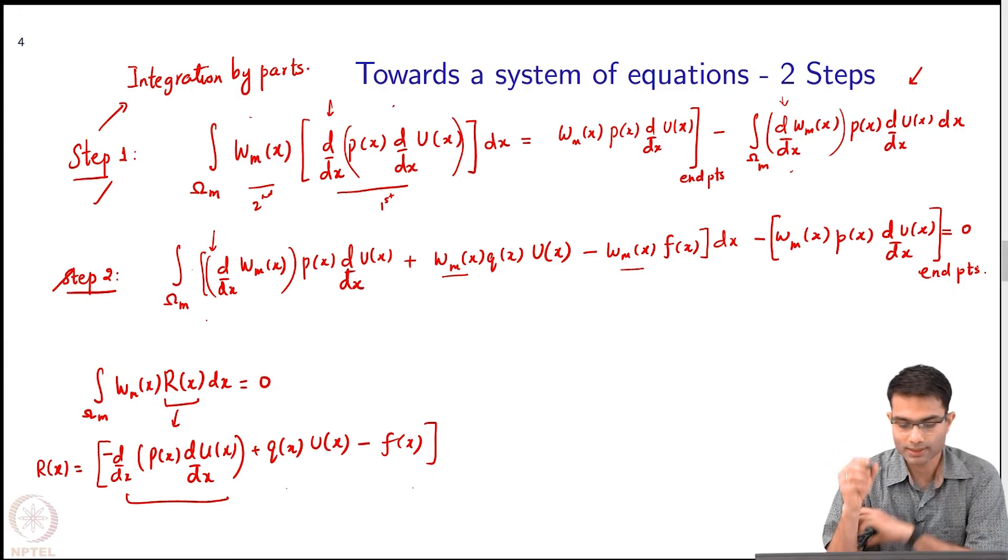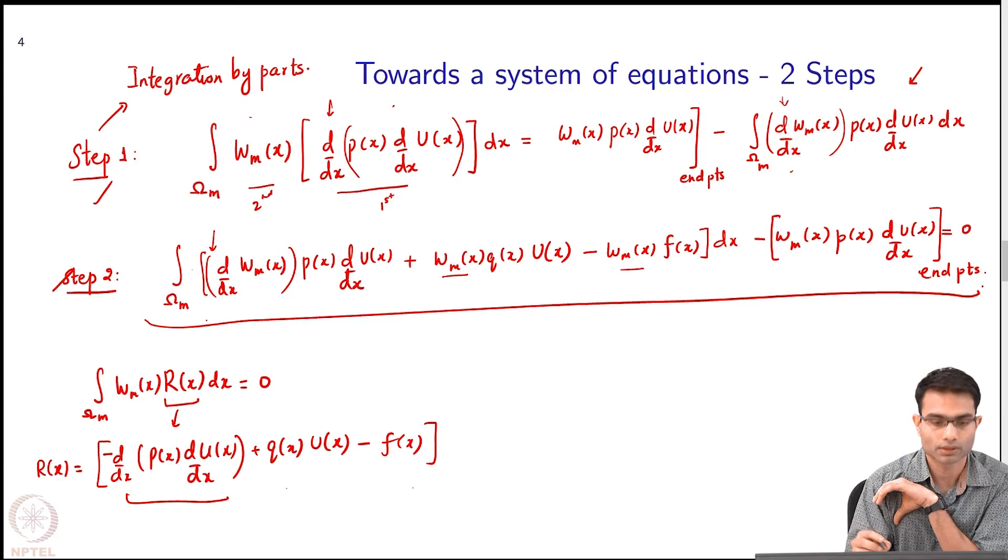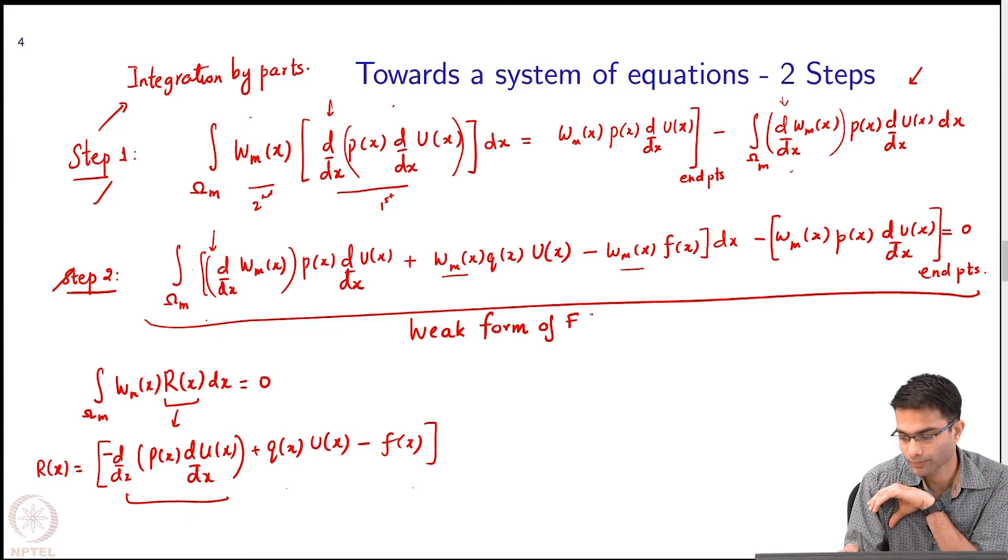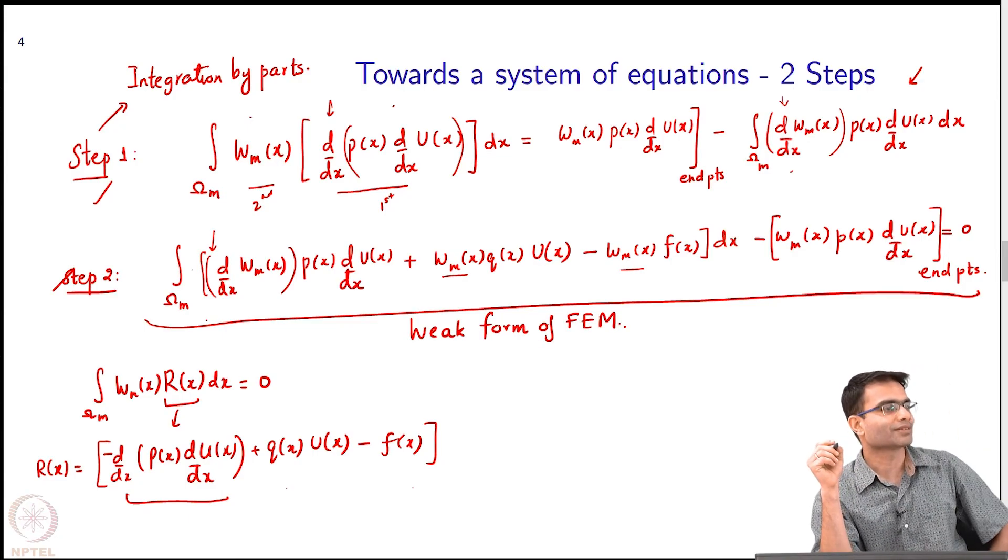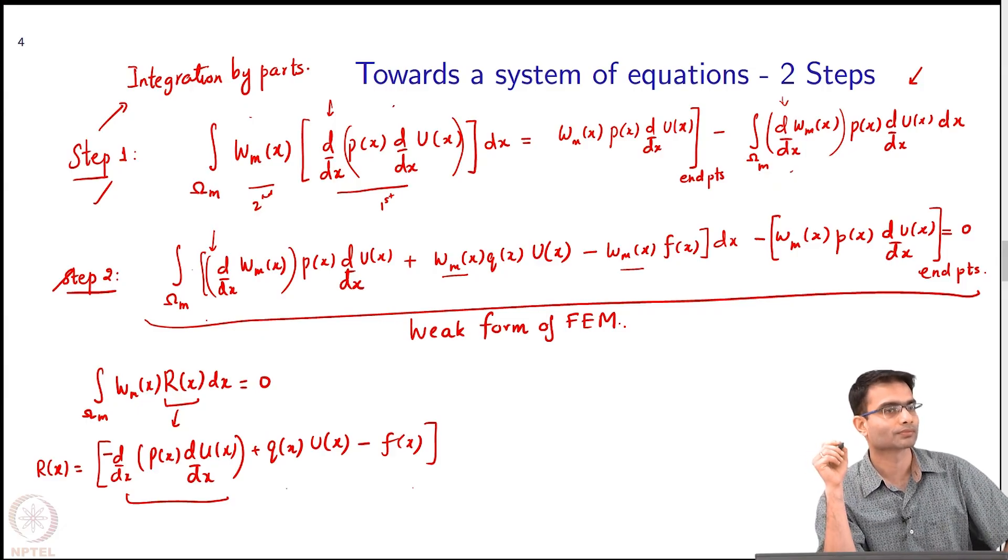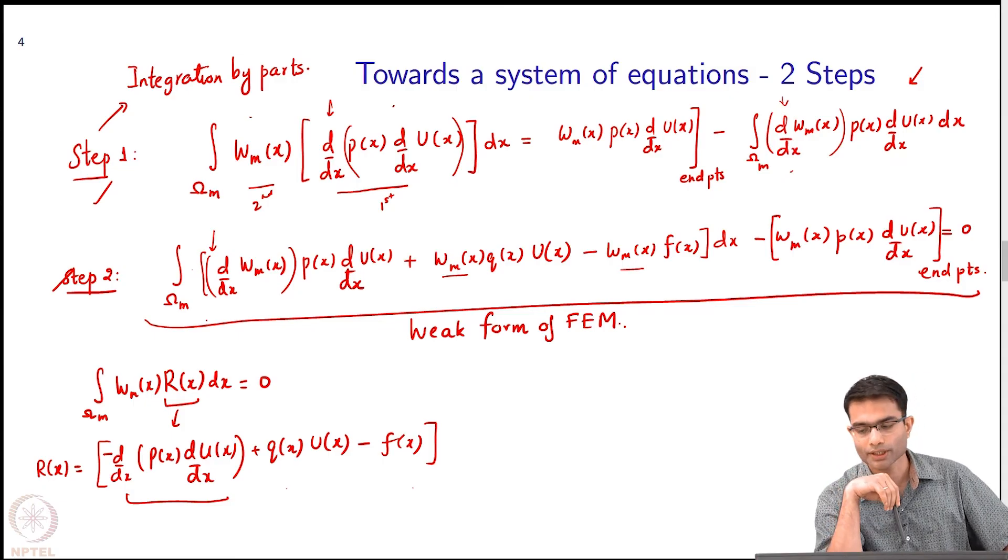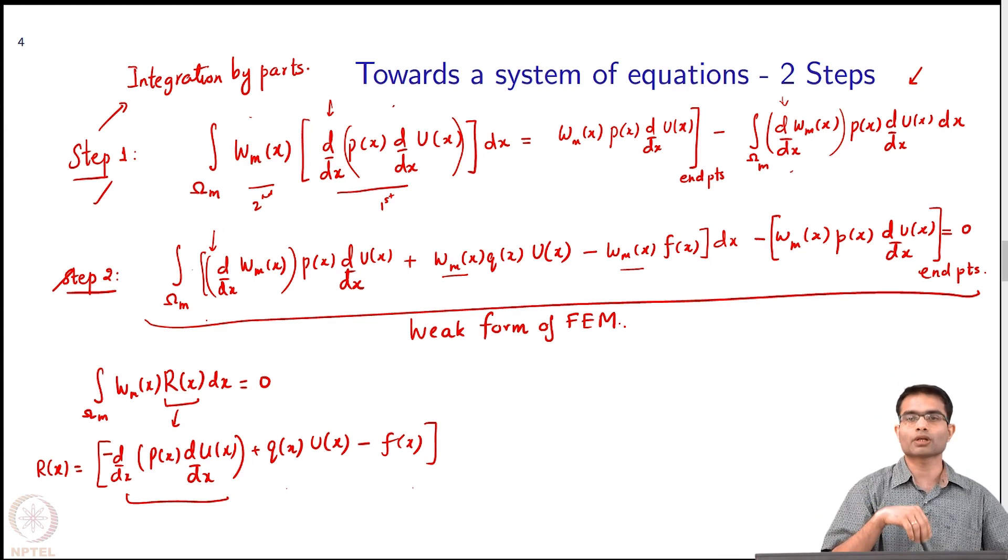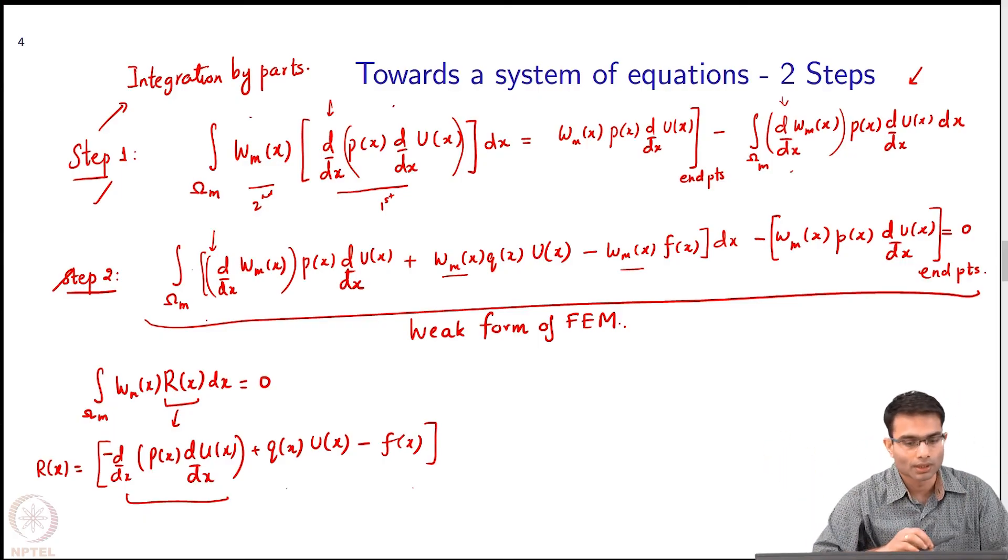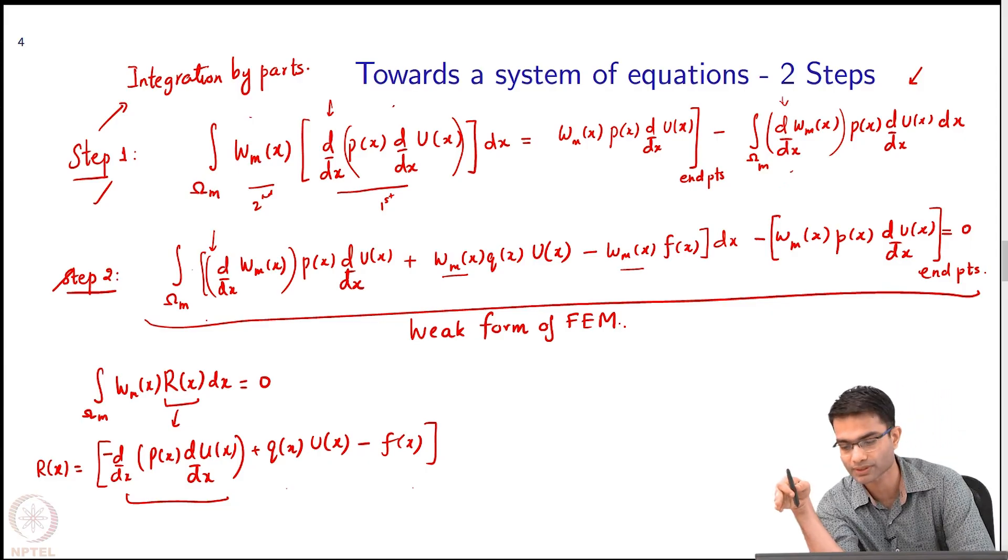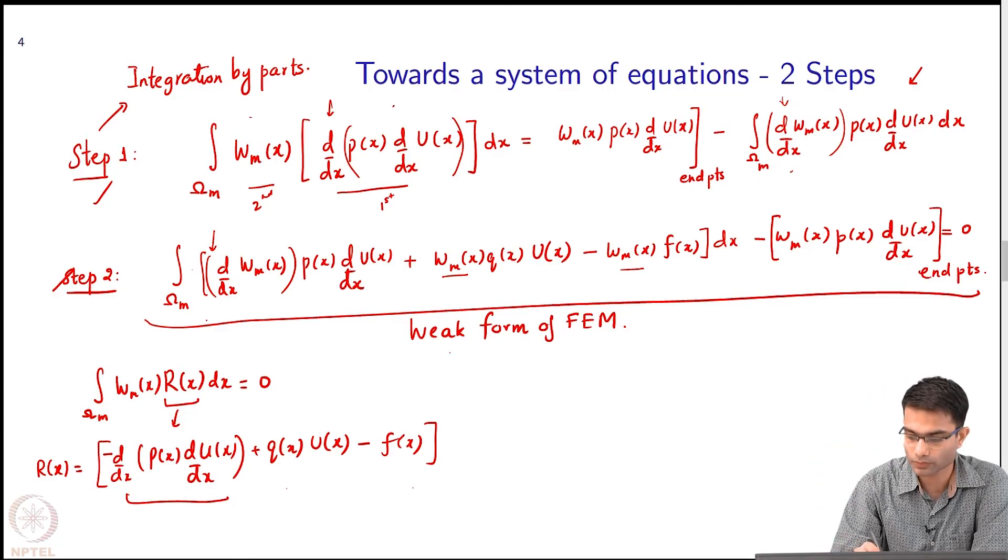Now this longest looking equation that we have written over here, this is what is called the weak form of FEM. Why is it called the weak form, any guesses? What is weak about it? The order of derivatives? Not the order of derivatives, it is simply weak because I am not enforcing at every point in the domain, I am enforcing it in a weighted sense over some interval. So it is called the weak form, that is all. But this is the form that we will use to convert into a numerical solution. Once I have transferred the second derivative into a first derivative. That is the first thing, this is the weak form, that is the first thing I want to mention.